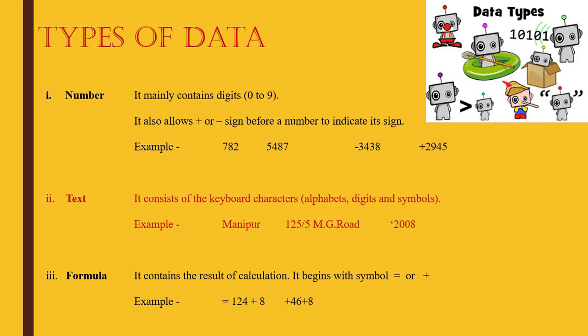Types of data: the most commonly used are number, text, and formula, though date and time are also there. A number contains digits and does not contain anything other than plus, minus, digits, and a decimal point. Plus and minus indicate positive and negative numbers; a point indicates a decimal number, but more than one point is not allowed, and space is not allowed either.